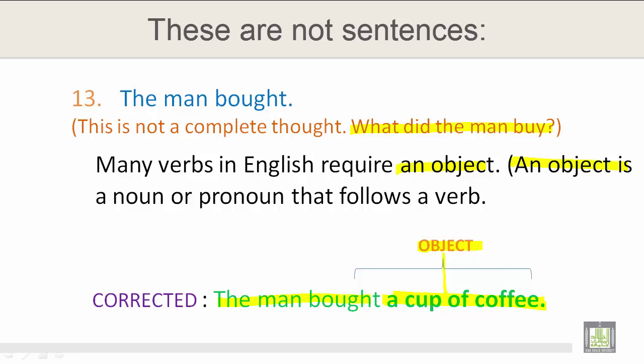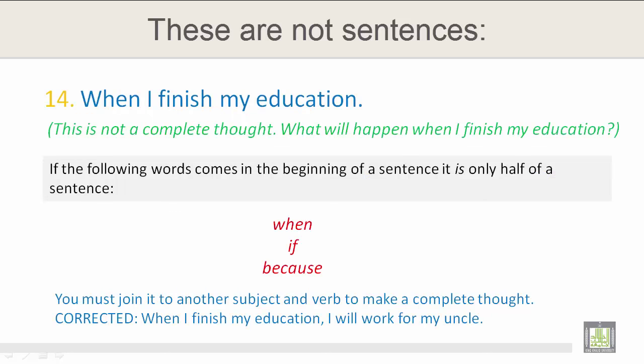Remember, an object is a noun or pronoun that follows a verb. Number 14: When I finish my education. This is not a complete thought. What will happen when I finish my education? If the words 'when,' 'if,' or 'because' come at the beginning of a sentence, it is only half of a sentence. You must join it to another subject and verb to make a complete thought. The corrected version of number 14 is: when I finish my education, I will work for my uncle.